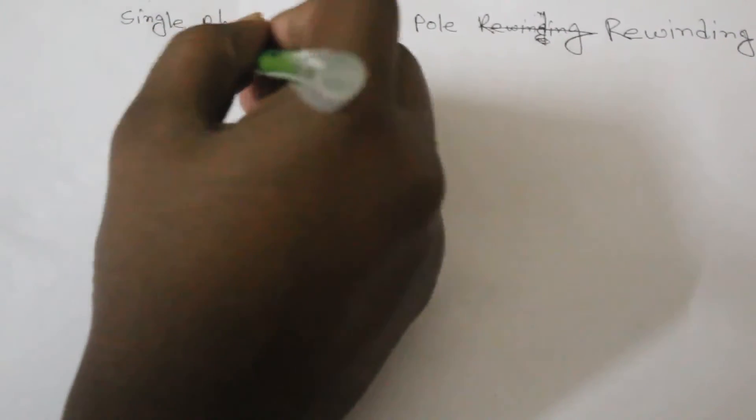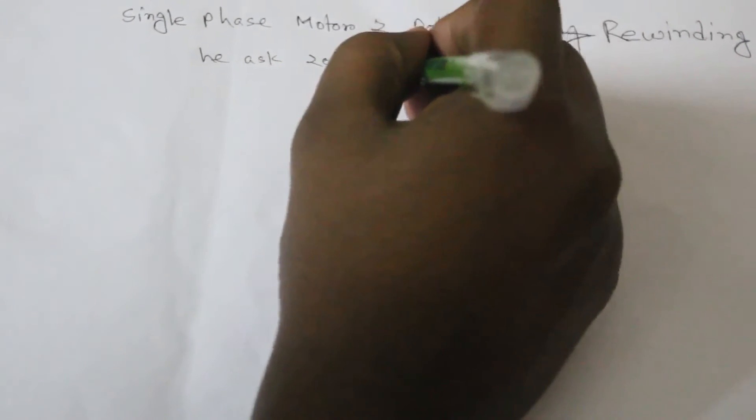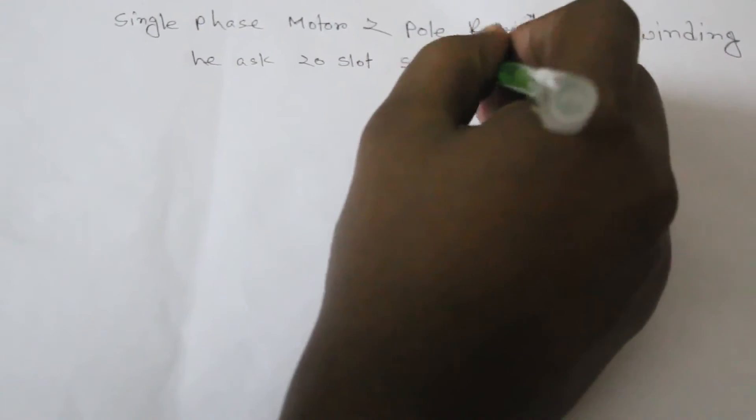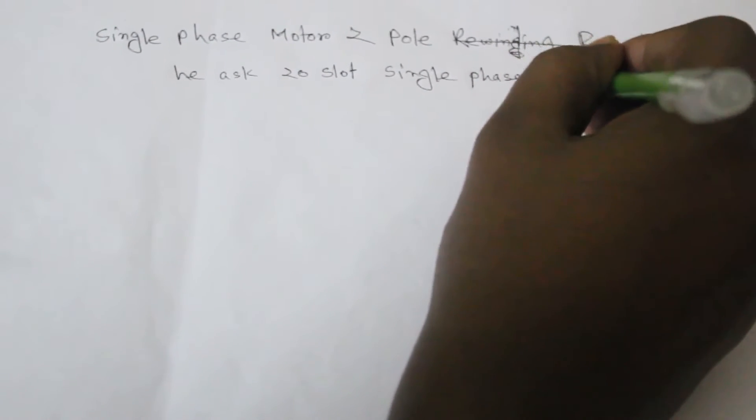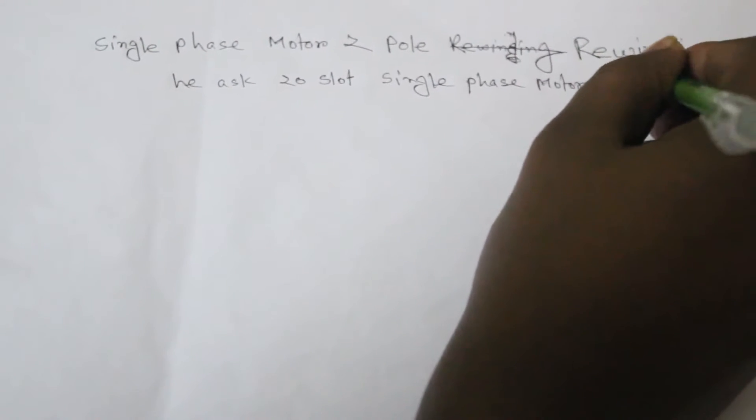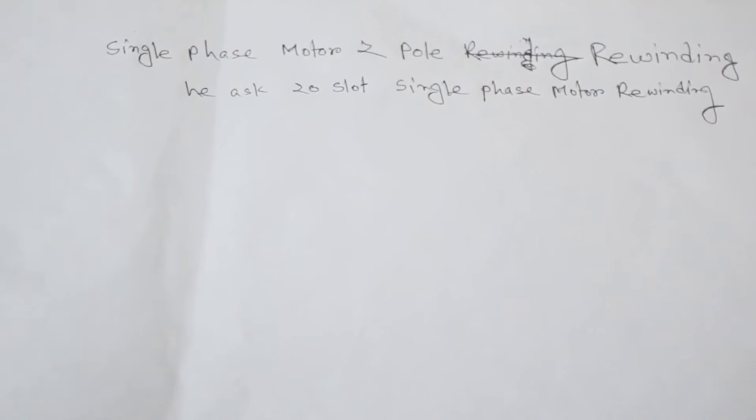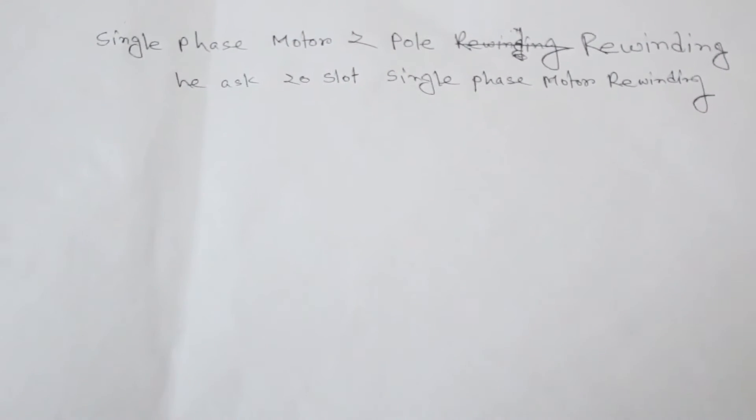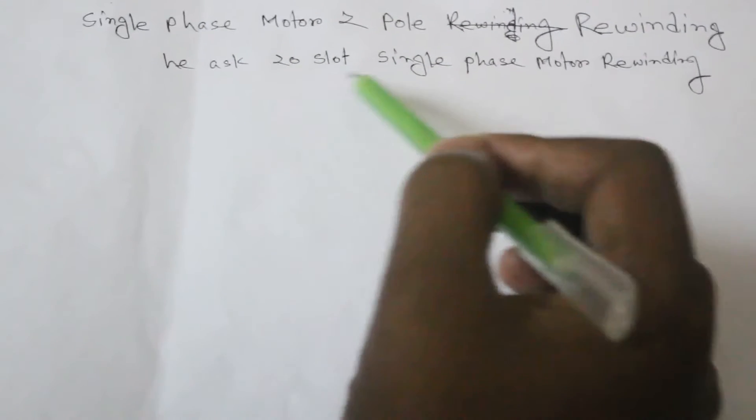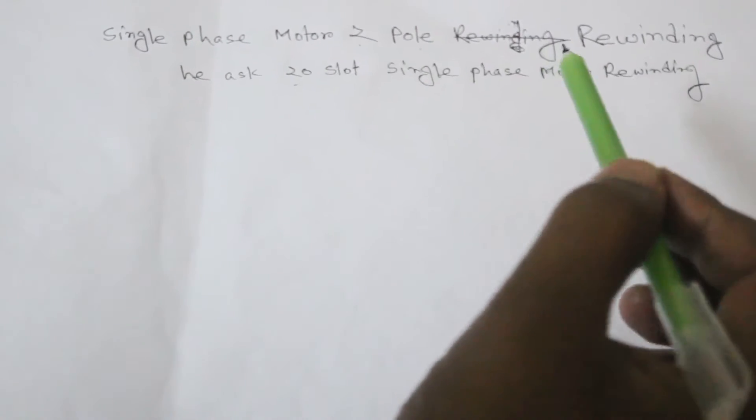He asks 20 slot single phase rewinding. But here is no data how many pole or how is fit. But I think this 20 slot motor is maybe 2 pole, so I winding is 2 pole now.